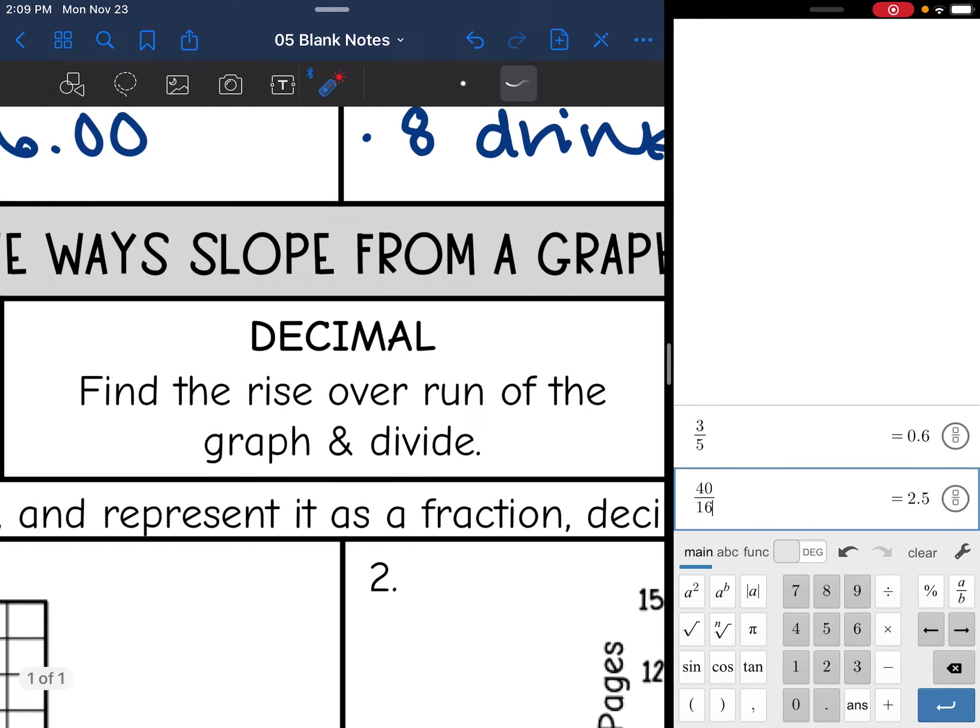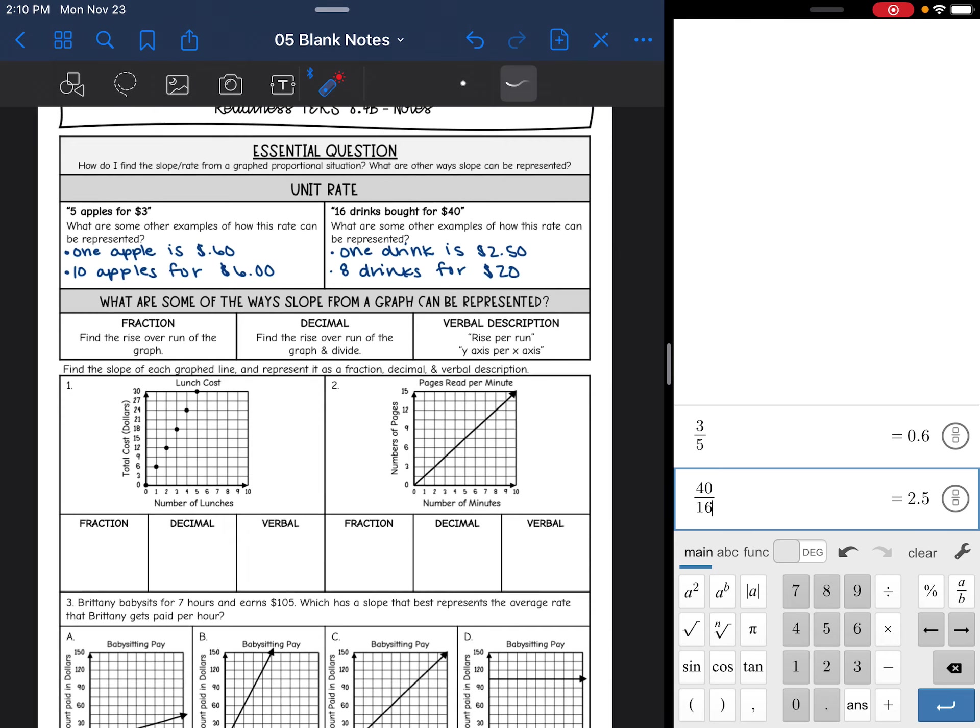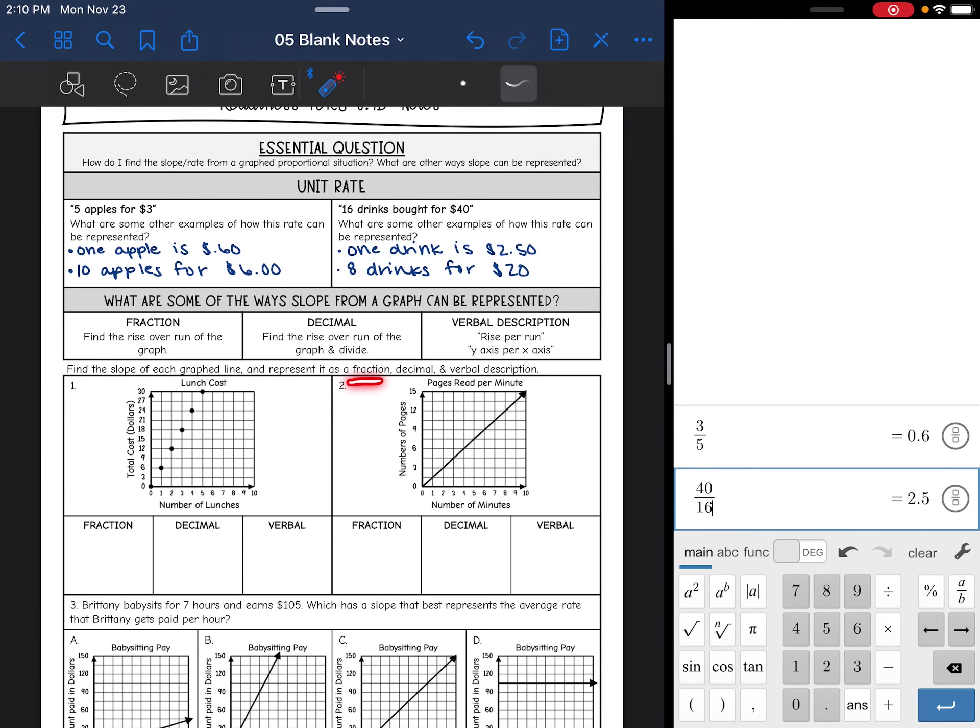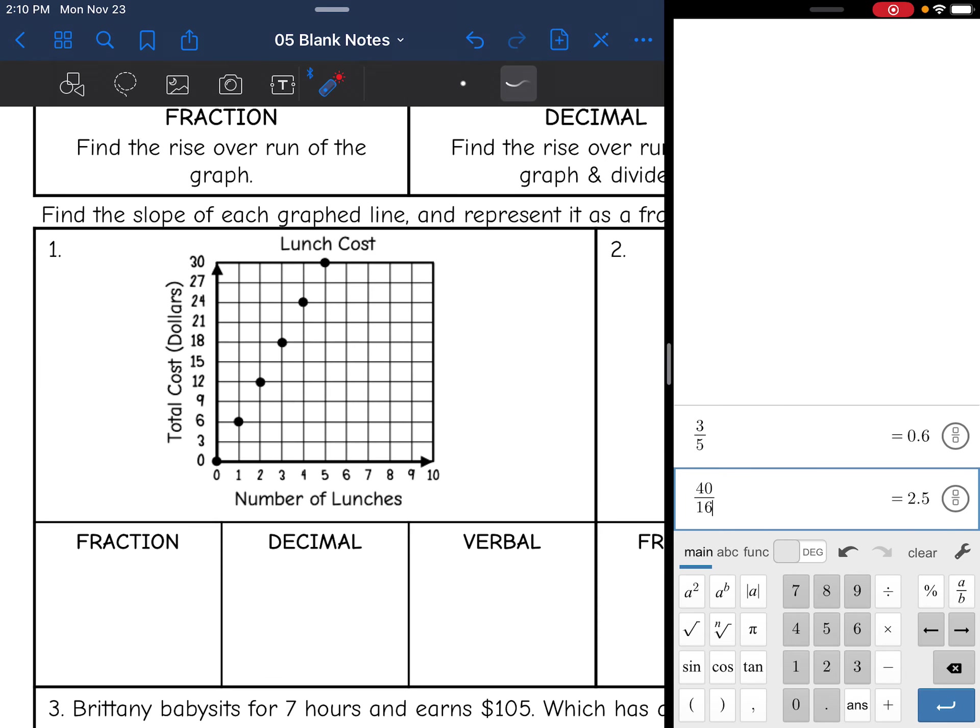Let's look at these graphs here on 1 and 2, and we're going to find the slope and represent it as a fraction, decimal, and verbal description. Just practice representing it in those different ways. This first one right here, notice that the y-axis is counting by threes. And there's not a line going through the points, but we can tell that it's linear. We will use those points to find the slope.